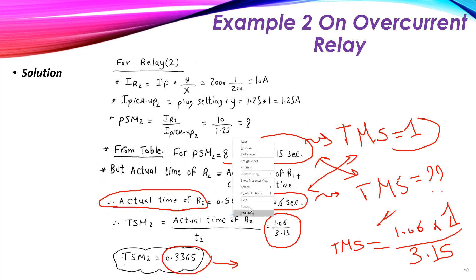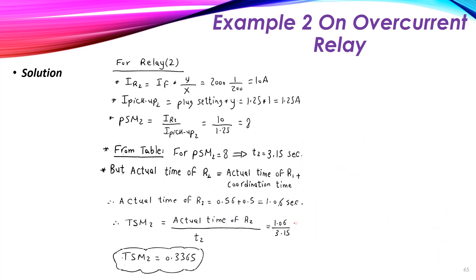To summarize: we have the current, then the time at TMS=1, and then the actual time at TMS2. The required TMS is the actual time of 1.06 divided by the time at TSM=1 which is 3.15, giving us this value. In these two examples we discussed overcurrent relays and how to select the pickup current and time multiplier setting. Thank you.